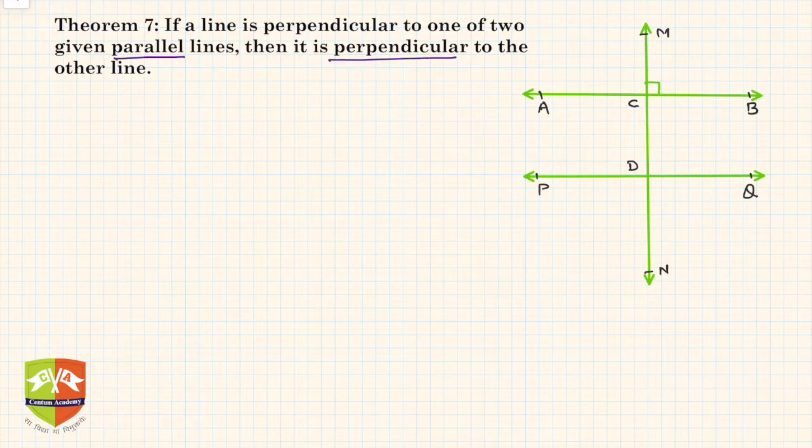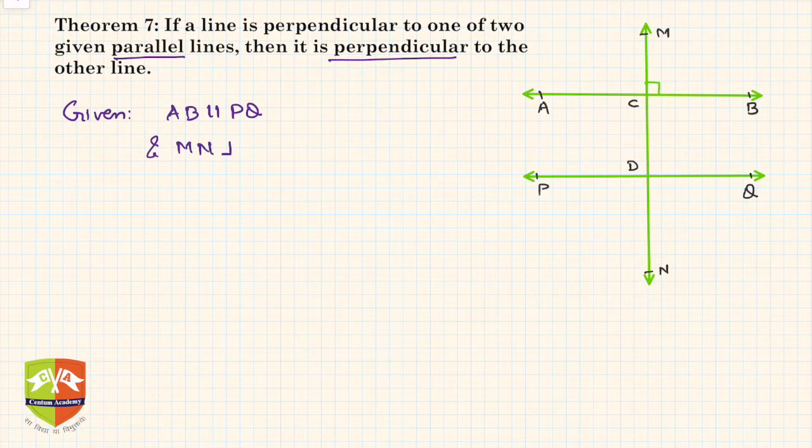Okay, so let's summarize this as given. So given is AB is parallel to PQ and MN is perpendicular to AB.